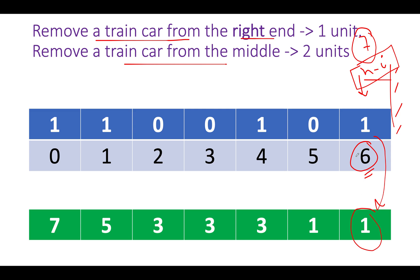Next we see a 0. When we see a zero in the right pass, we directly copy the value from the right index. The value is 1, so 1 gets copied here.